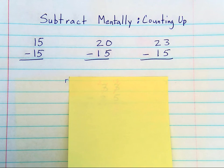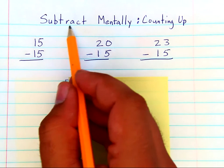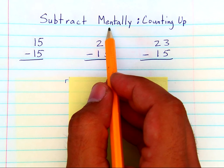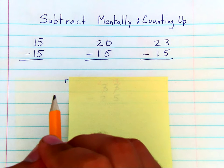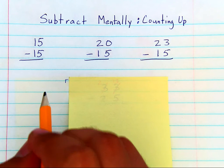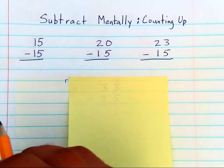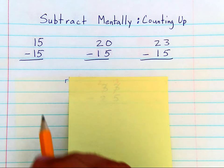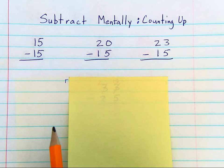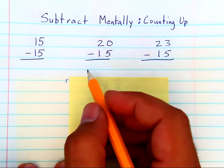This chapter is talking all about subtraction, and it starts out with subtracting mentally. Mental subtraction is very difficult, and I wouldn't expect a third grader to pick it up after one lesson, so please revisit these strategies over and over. It'll help with your students' number sense — that's their ability to look at numbers and see how they work, instead of just relying on a procedure.